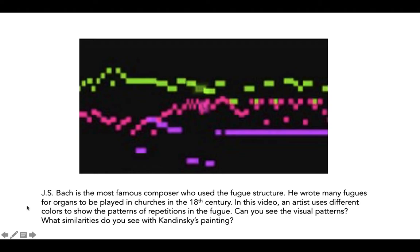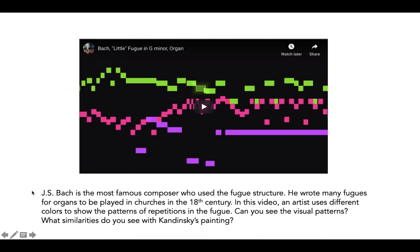I'm going to let you hear what a fugue sounds like. This is a fugue by Johann Sebastian Bach, who is one of the most famous composers who used and perfected the fugue. He wrote many fugues for organs to be played in churches in the 18th century. In this video, an artist uses different colors to show the patterns of repetitions in the fugue. What similarities do you see with Kandinsky's painting?